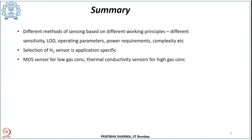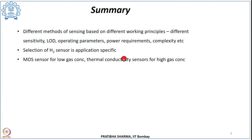To summarize the section on hydrogen sensing, we have seen different methods based on different working principles. Sensitivity, detection level, operating parameters, power requirements, and complexity vary from sensor to sensor. Sensor selection is highly application-specific — for example, metal oxide sensors are suited for low gas concentrations while thermal conductivity sensors are suited for higher concentrations. In the next class, we will cover hydrogen safety, including challenges at the point of production, storage, utilization, and transport.